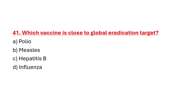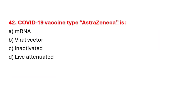Question 41: Which vaccine is close to the global eradication target? Option A: Polio. Option B: Measles. Option C: Hepatitis B. Option D: Influenza. Correct answer is Option A: Polio.